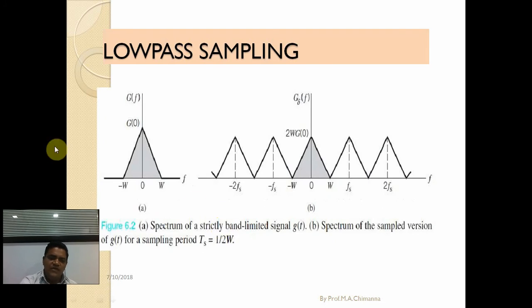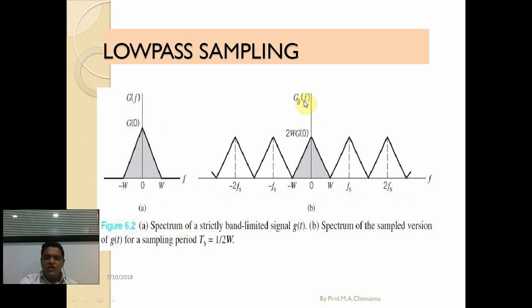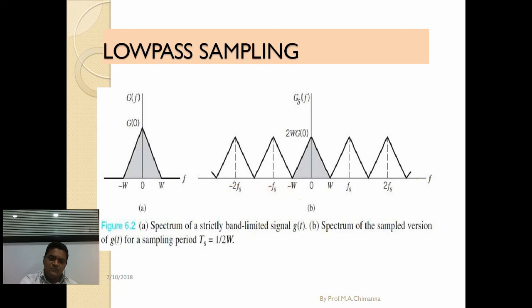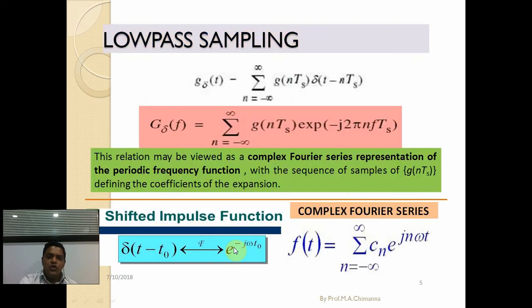In low pass sampling, this is the spectrum of a strictly band-limited signal having bandwidth two W — found as W minus (minus W), which equals two W. The adjacent waves have both W, fs, two fs and on the negative side minus W, minus fs, minus two fs. This is called the spectrum of the sampled version of g(t), with sampling period T_s equal to one upon two W.